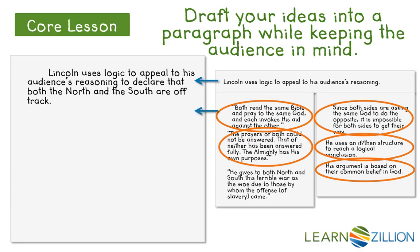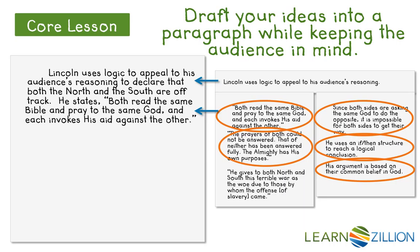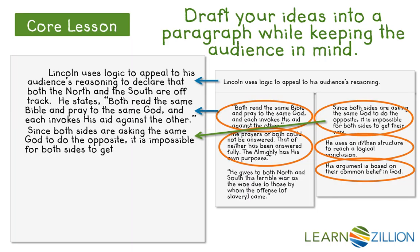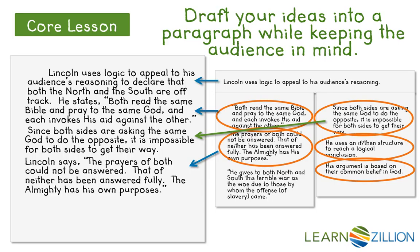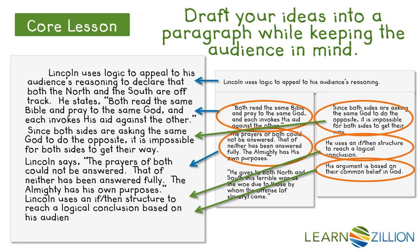Next, let's add the first quotation that lays the foundation for Lincoln's argument. He states: 'Both read the same Bible and pray to the same God, and each invokes his aid against the other.' Now let's add our first analysis that explains the quotation: Since both sides are asking the same God to do the opposite, it is impossible for both sides to get their way. Now we'll add our next quotation. Lincoln says: 'The prayers of both could not be answered. That of neither has been answered fully. The Almighty has his own purposes.' As I look at the last two pieces of analysis, I think they could be combined to say: Lincoln uses an if-then structure to reach a logical conclusion based on his audience's common belief in God.